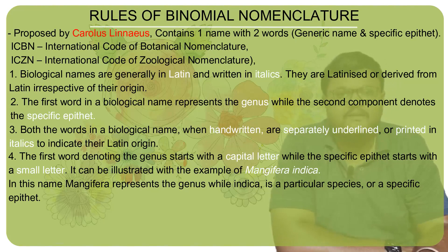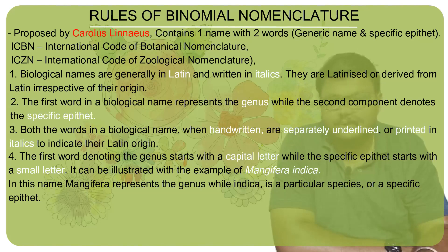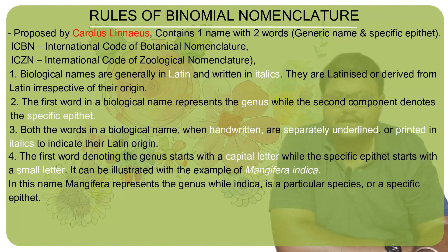Let us take an example: mango is written as Mangifera indica. In this name, 'Mangifera' has the first letter 'M' in capitals, indicating it is the genus name. 'indica' is written in small letters, indicating it is the specific epithet.